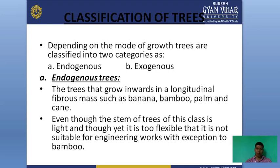Examples of endogenous trees include banana, bamboo, and palm. Although their stems are light and flexible, apart from bamboo, we cannot use other endogenous trees in construction because they are too lightweight and too flexible.